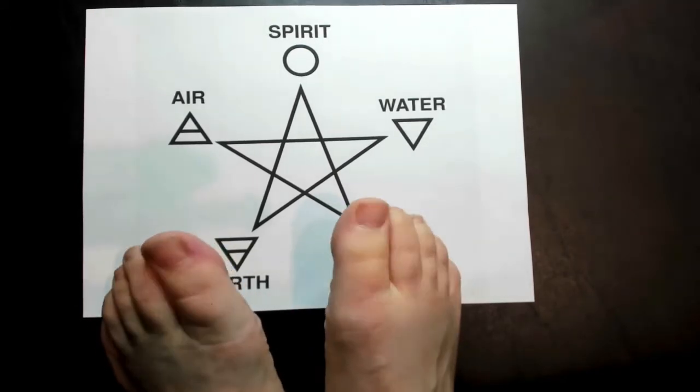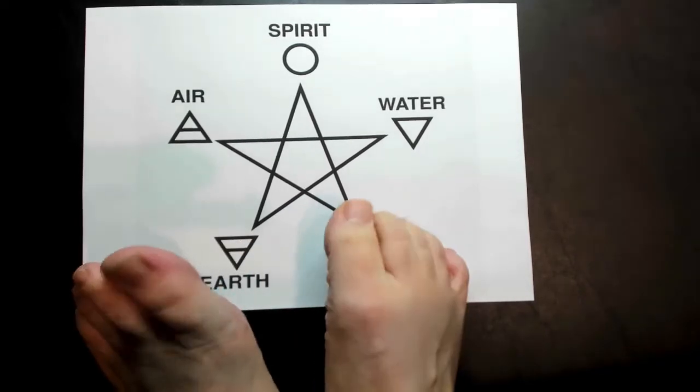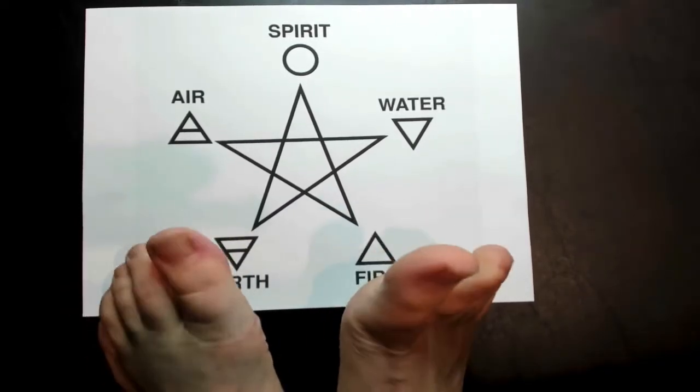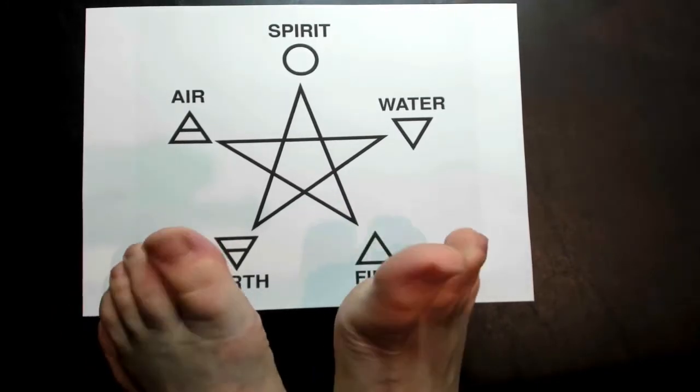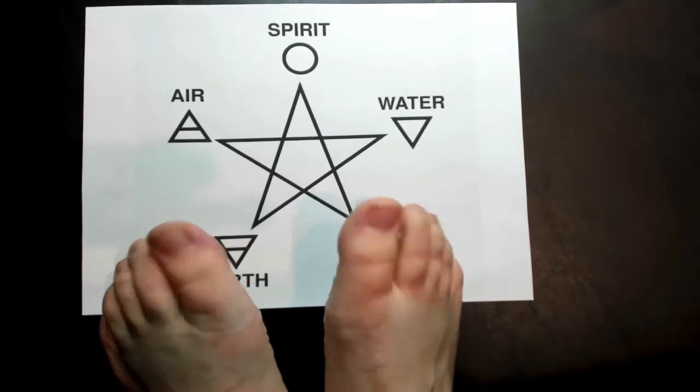Air signs are Gemini, Libra, and Aquarius. And water signs are Cancer, Scorpio, and Pisces.